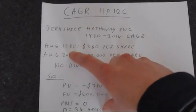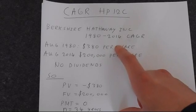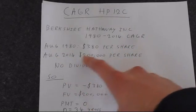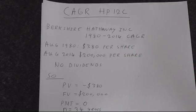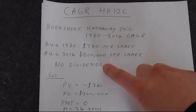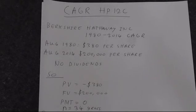In August 1980, Berkshire shares were around $380 per share. By August 2014, they were $200,000 per share. This is the Berkshire A shares. During this period, the shareholders didn't get any dividends, so that simplifies the calculation somewhat.